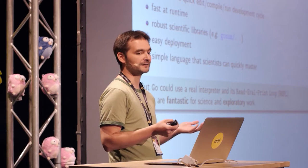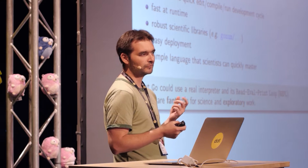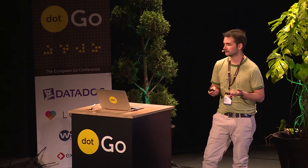Go is a simple language that scientists can learn and quickly master. But in my view, Go could also use a real interpreter and a read-eval-print loop — the so-called REPL — because REPLs are fantastic for science and any kind of exploratory work.